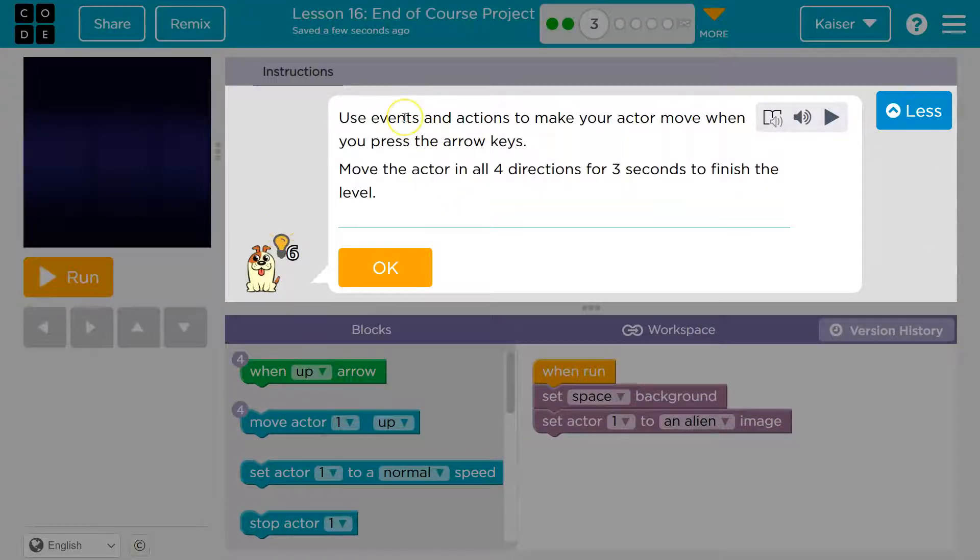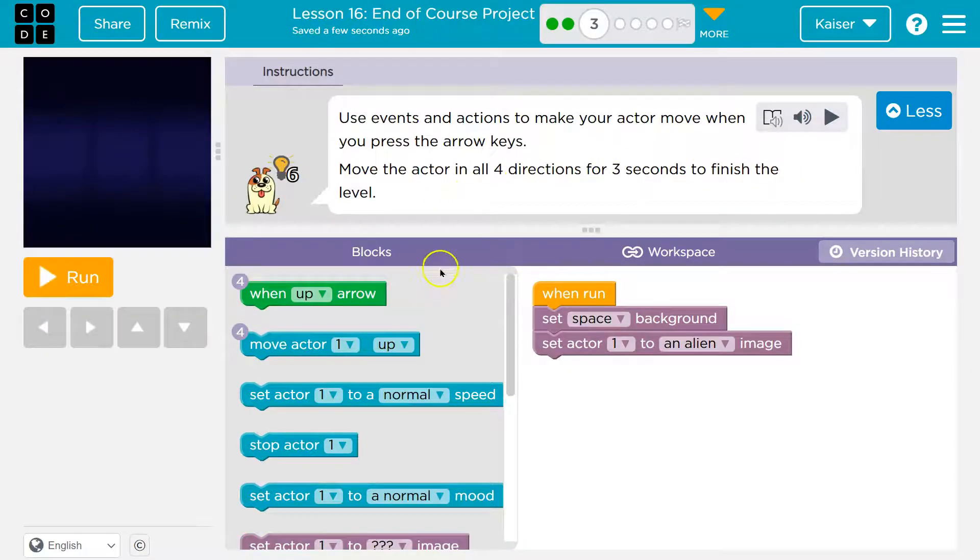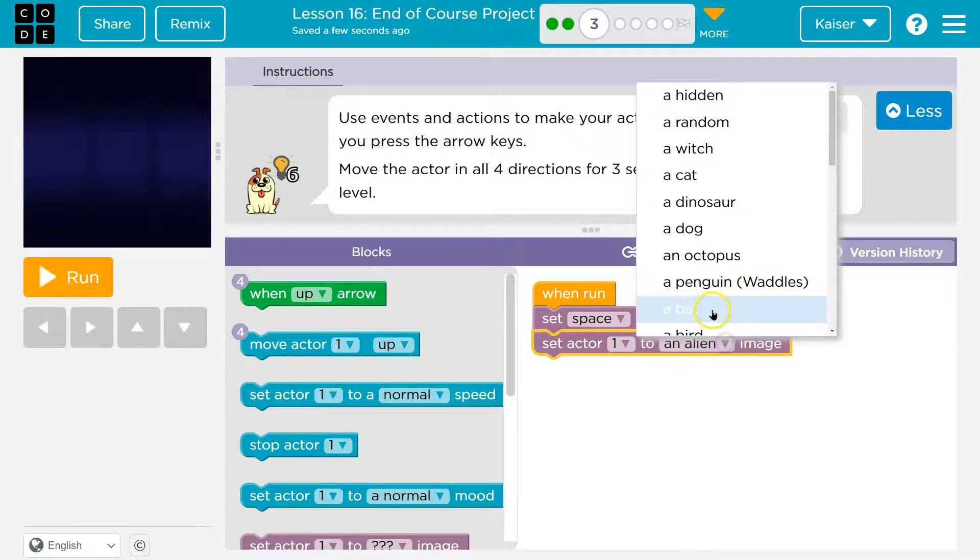And make sure to pick whatever images you want for yours, right? Make it make sense for you. Do what you like. Use the events and actions to make your actor move when you press the arrow key. Move the actor in all four directions for three seconds to finish the level. Okay. So now this is all connected. When I hit run, we set my background to space and I pick an alien. Of course, you could pick whatever you want.